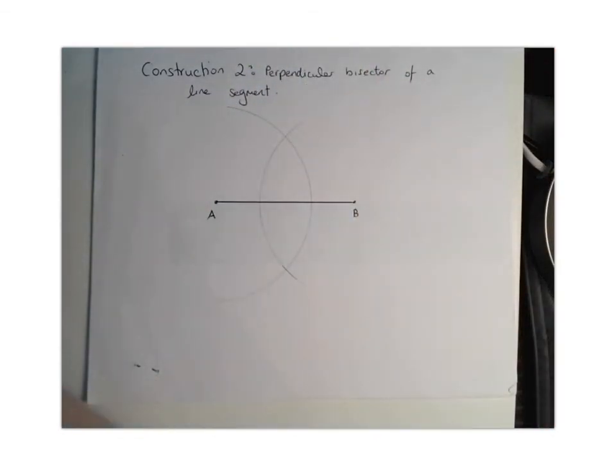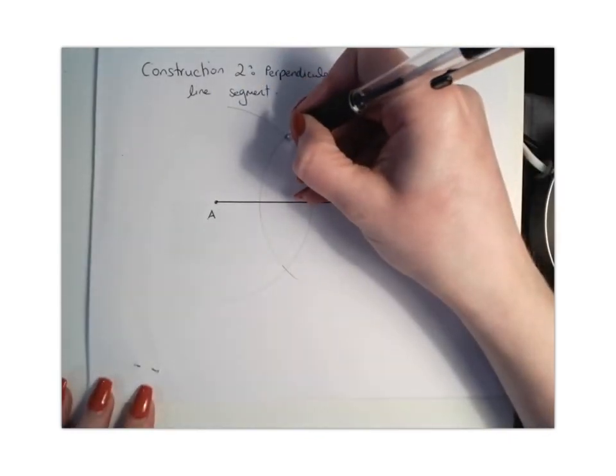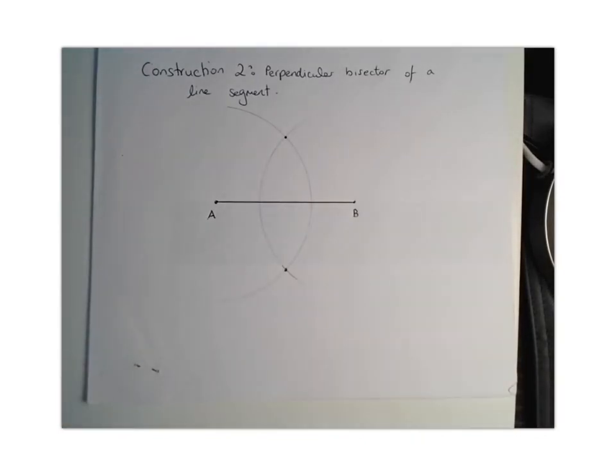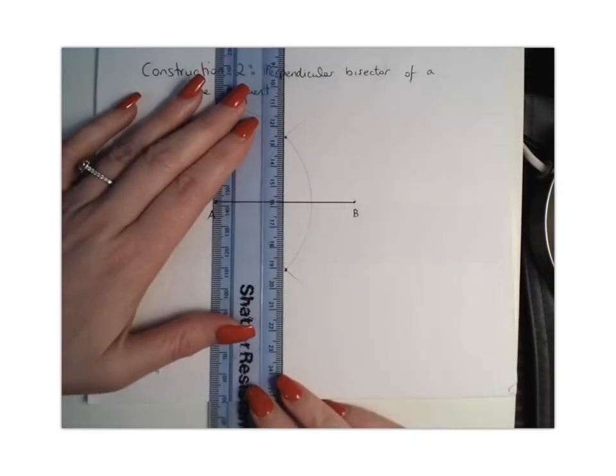Once you've got that done, you're going to mark the two points where they intersect. So we can see they intersect here and here. Then you're going to get your straight edge or your ruler and join those two points together.